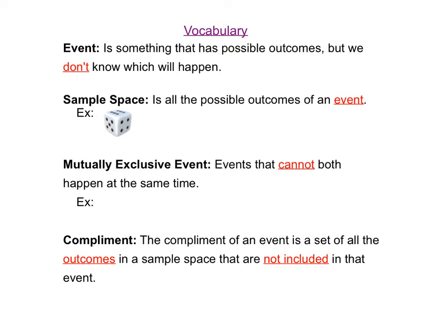Before we jump into the examples, let's review some vocabulary. An event is something that has possible outcomes, but we don't know which will happen. An example of an event would be spinning a spinner or drawing a card. A sample space is all the possible outcomes of an event. For a classic example, suppose we have a standard six-sided die. All of the possible outcomes would be the sample space: 1, 2, 3, 4, 5, or 6. Oftentimes we list the possible outcomes in curly brackets.